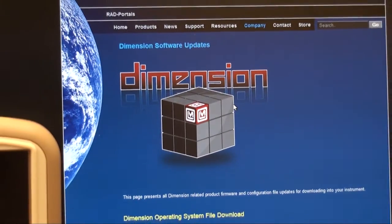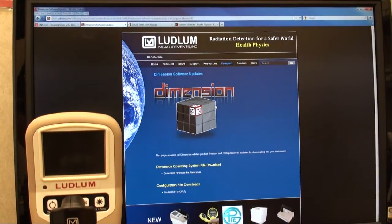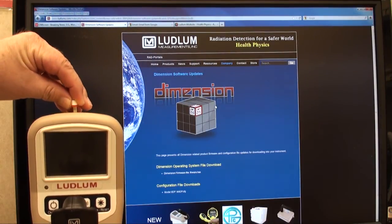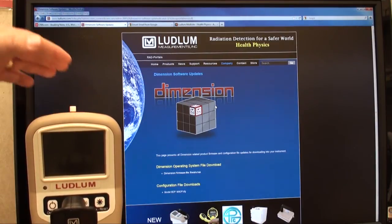And finally, a fourth benefit is receiving free firmware updates. Users can download the latest firmware from Ludlum's website, mount it to a USB thumb drive, then seamlessly upload it into the instrument. The updates are all free, complements of Ludlum.